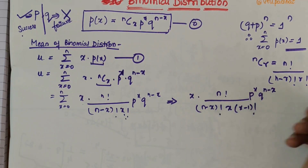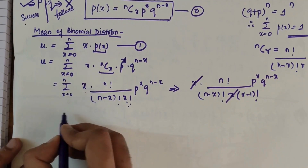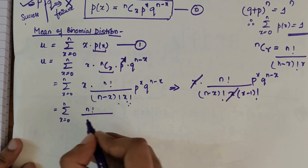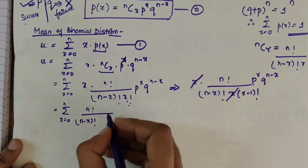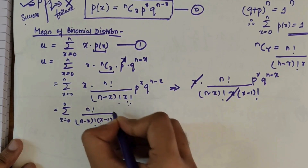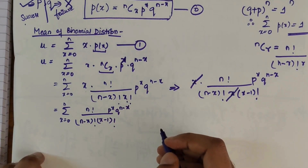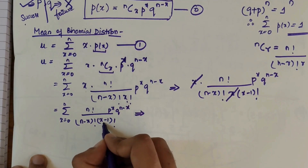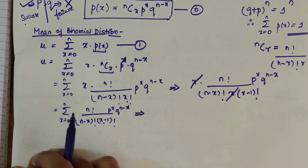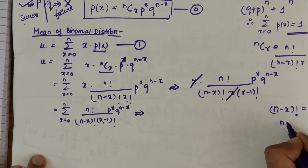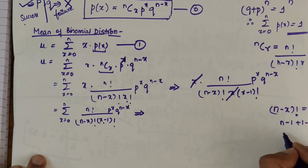After canceling X and X, we retain P^X and Q^(N-X) as they are, giving us summation from X=0 to N of N factorial over (N minus X factorial times (X-1) factorial) times P^X times Q^(N-X). Now, to simplify further, we convert the expression by writing N minus X as N minus 1 minus (X minus 1).